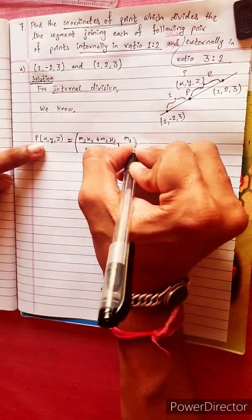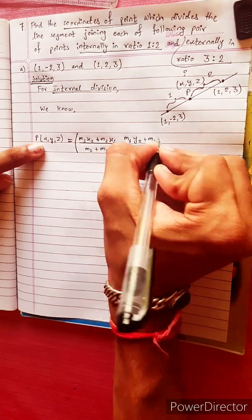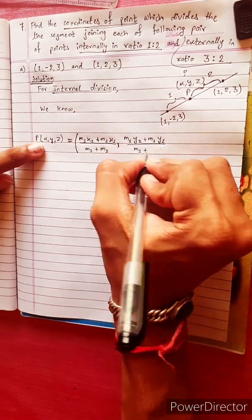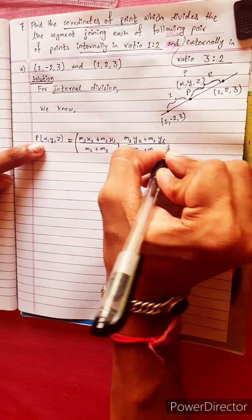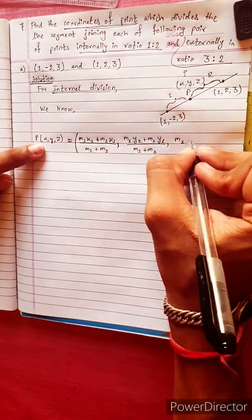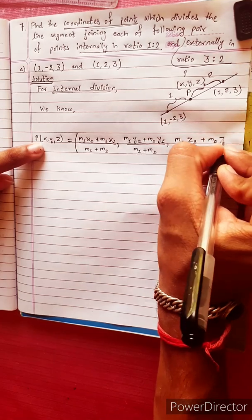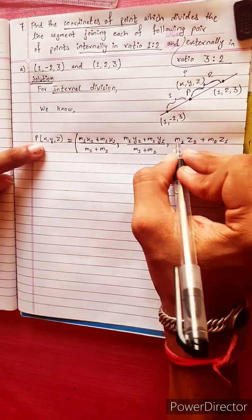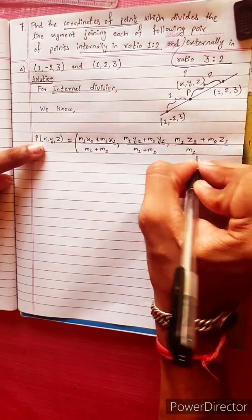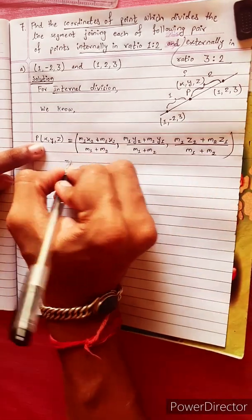Similarly, the y-coordinate is m1·y2 plus m2·y1, divided by m1 plus m2. And the z-coordinate is m1·z2 plus m2·z1, divided by m1 plus m2.